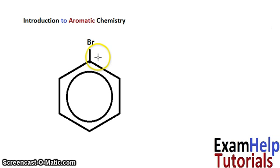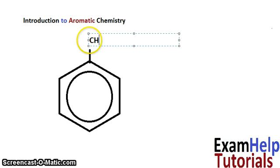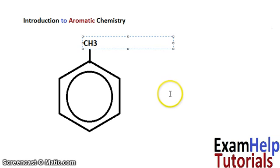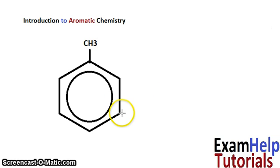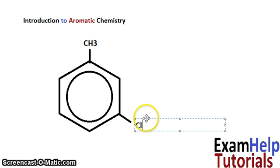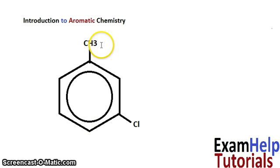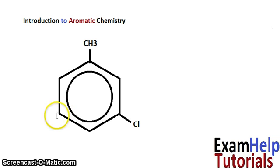However, we may have something different — say a methyl group and also a chloro group on the ring. The methyl group is more important, so it takes position one, and we don't bother giving it a number. We then number around the ring: one, two, three. So if the chlorine is at position three, it would be 3-chloromethylbenzene. If we had it at position two, it would be 2-chloro, and at position four, it would be 4-chloro.